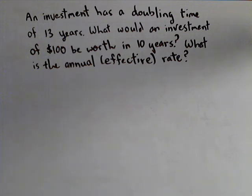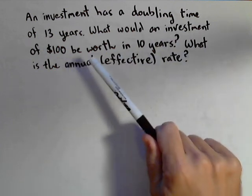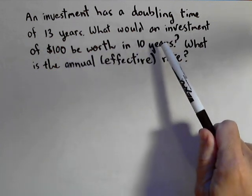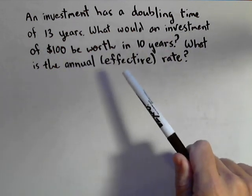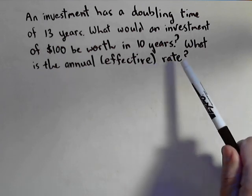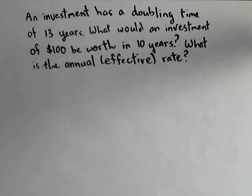So we have an investment that has a doubling time of 13 years. First thing we're gonna do is find out what an investment of $100 would be worth in 10 years. And then we're gonna find out what's the annual or effective rate. What would the rate be, what percentage are we gaining each year?